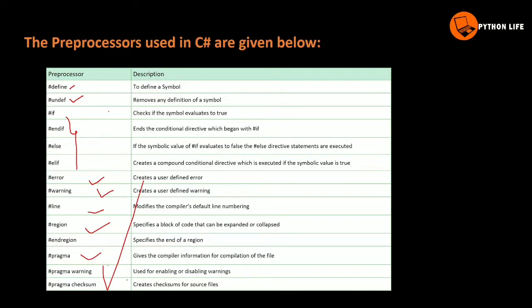Pragma is used for enabling and disabling warnings. We will use pragma warning and pragma checksum for the source file, which creates a checksum for the source file.